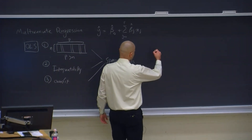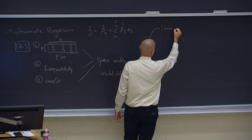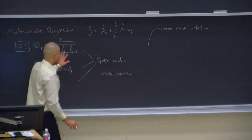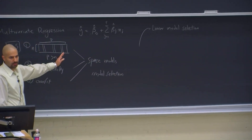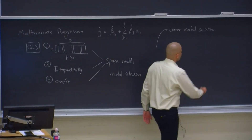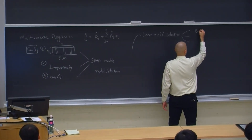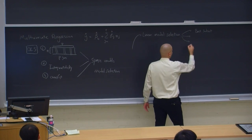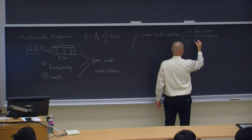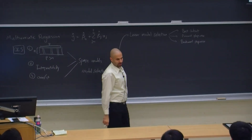This is the main challenge we're going to talk about today, and there are three main approaches. The first approach is linear model selection, which involves evaluating some of these 2^P models and systematically choosing the best one. There are three alternatives: best subset selection, forward stepwise selection, and backward stepwise selection.